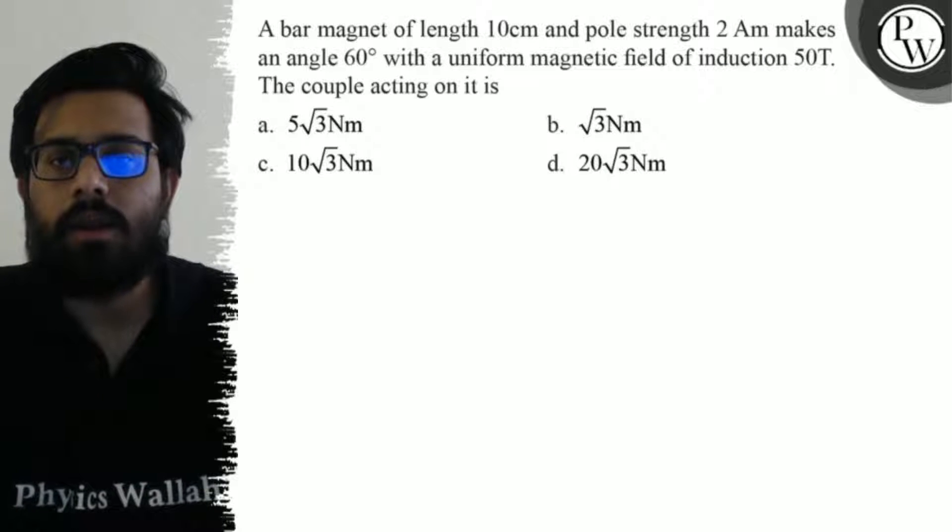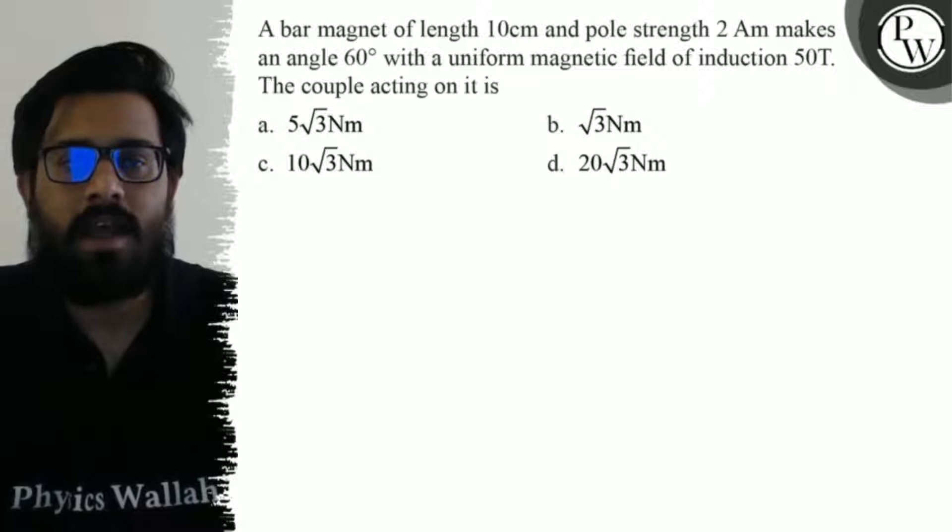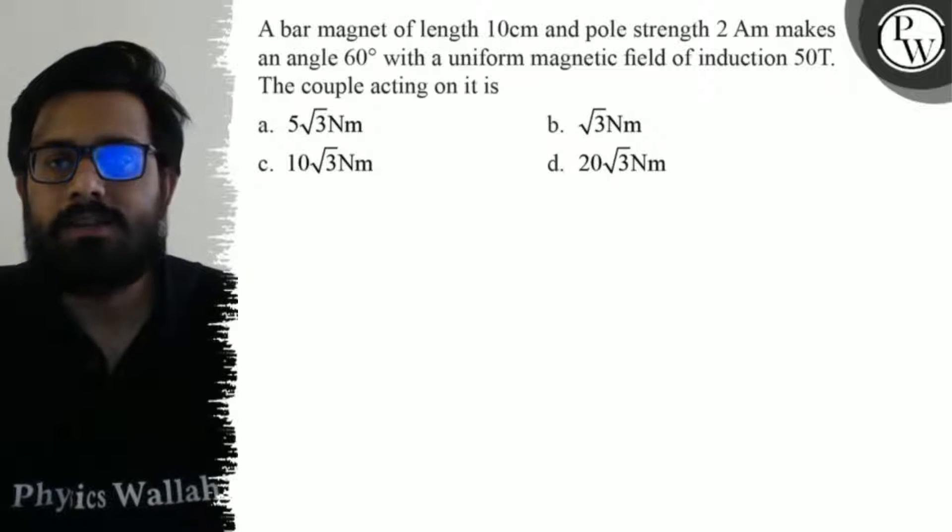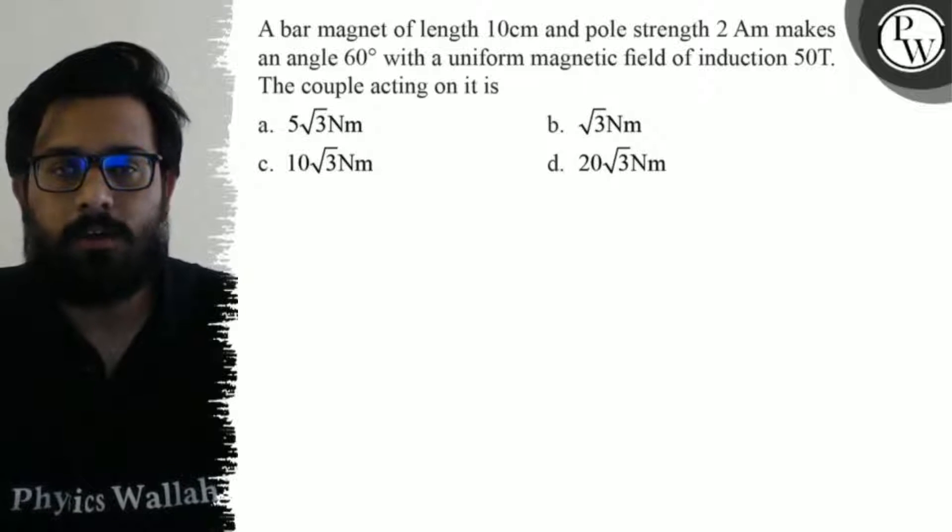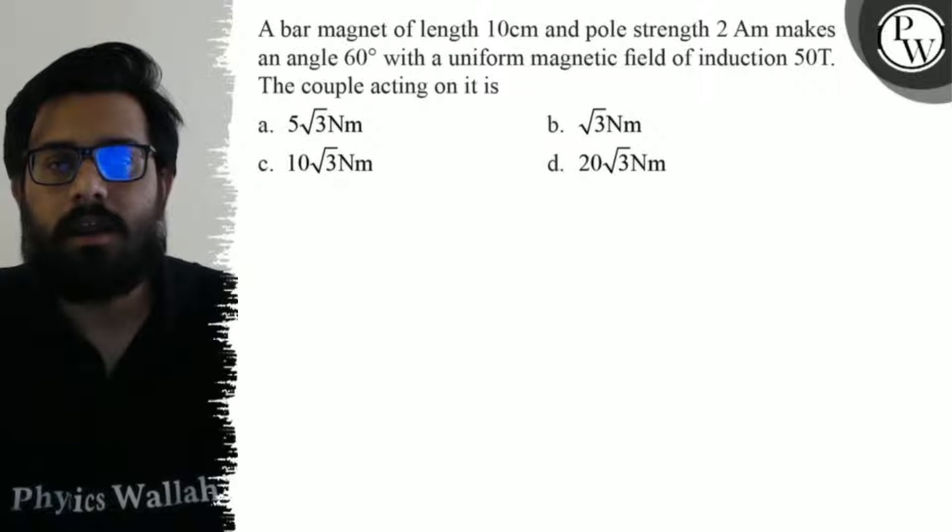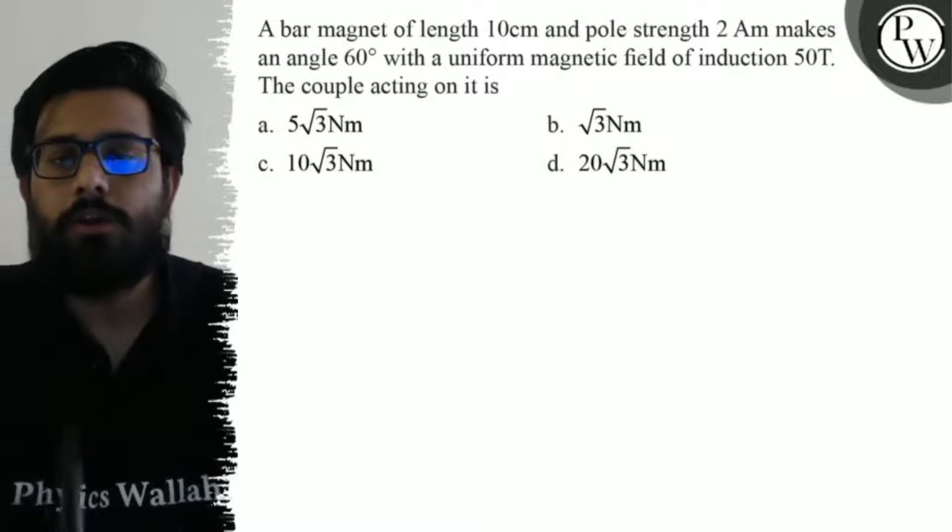The couple acting on it is: your first option is 5 under root 3 newton meter. Second option says under root 3 newton meter. The third option says 10 under root 3 newton meter and the fourth option says 20 under root 3 newton meter.